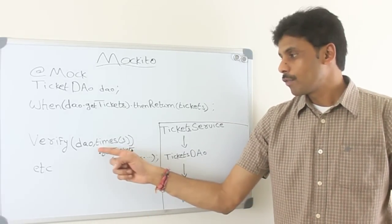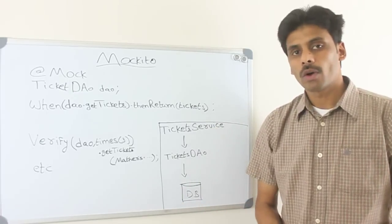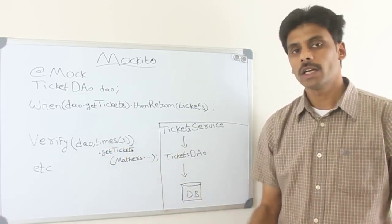And you can, by default, verify checks for one time, whether a method got called once or not, but you can also specify the number of times.